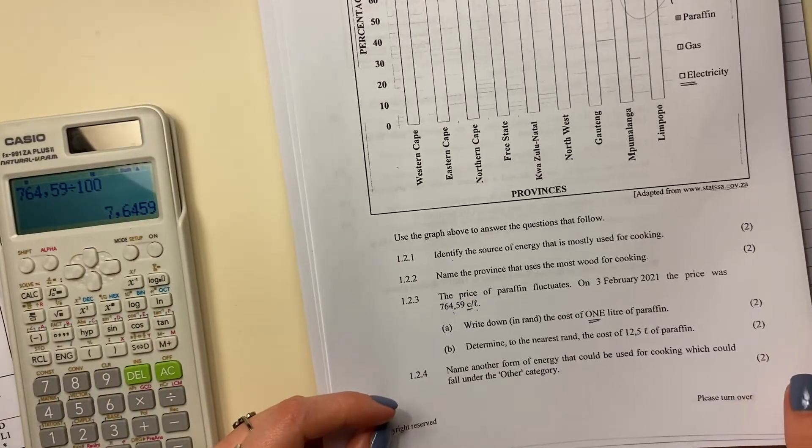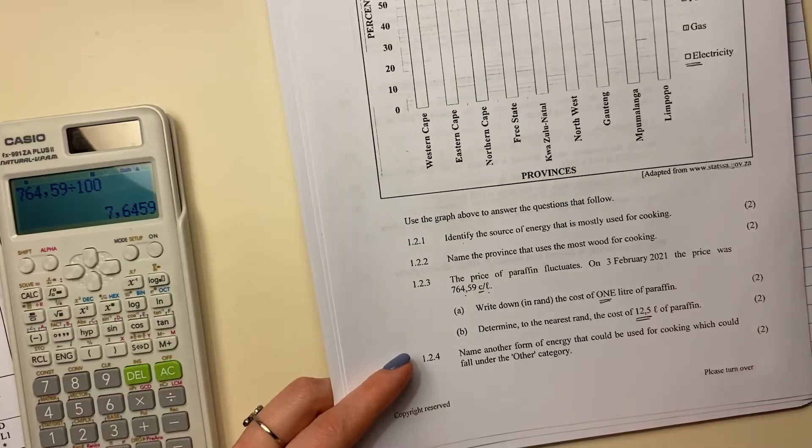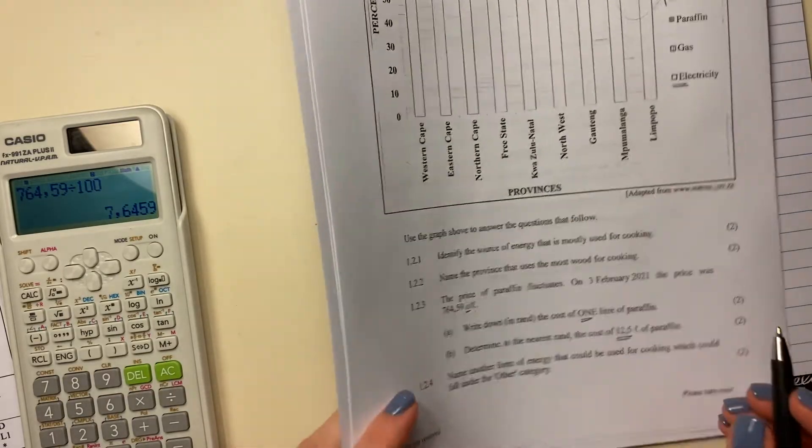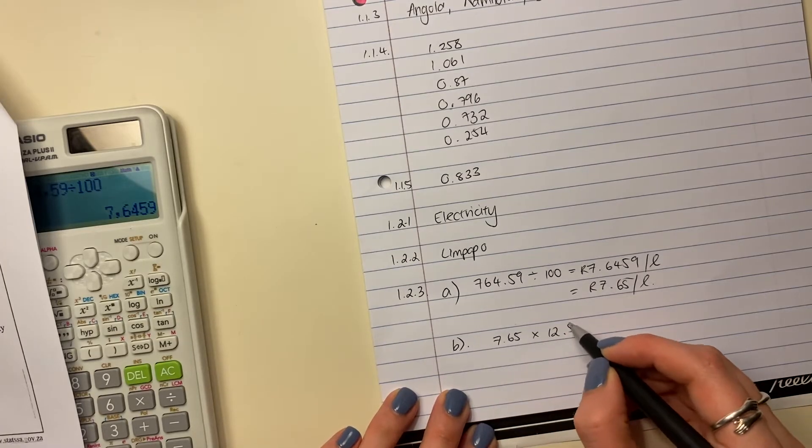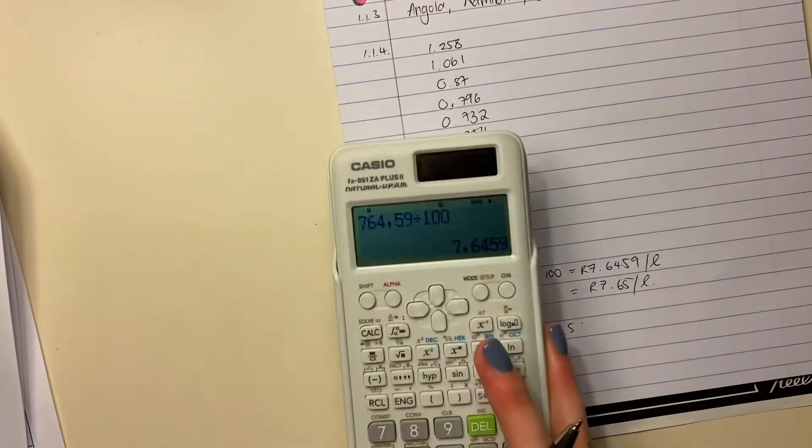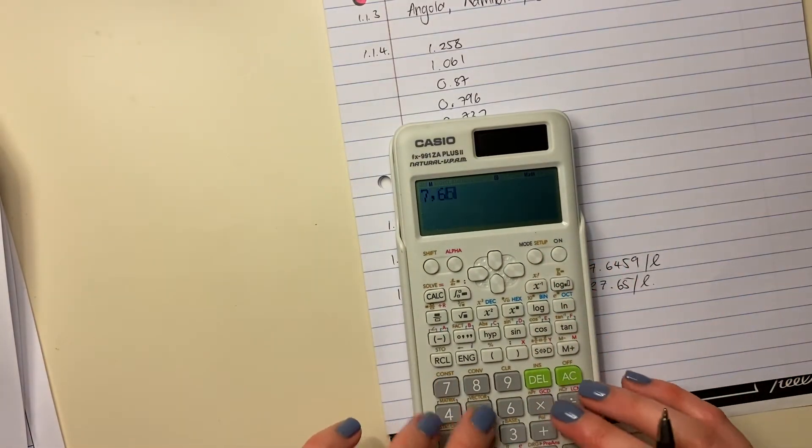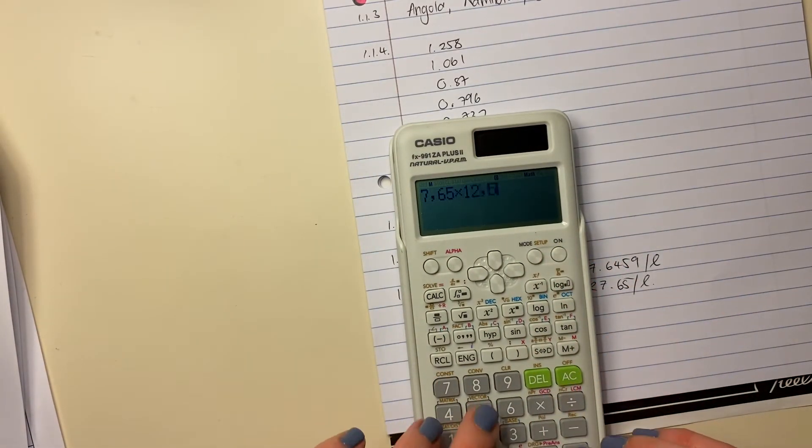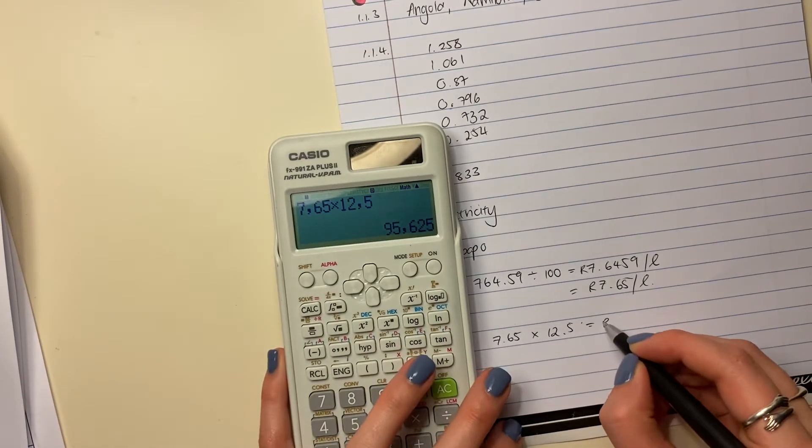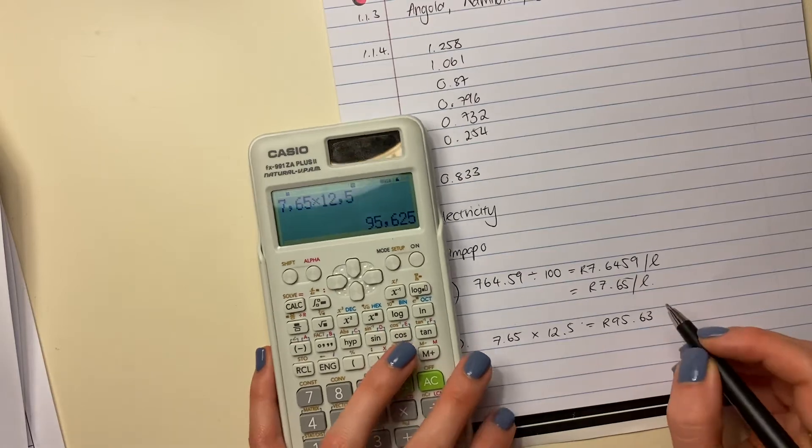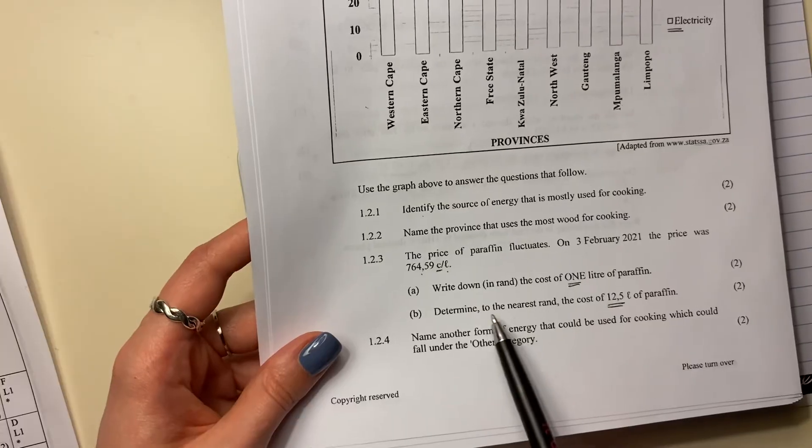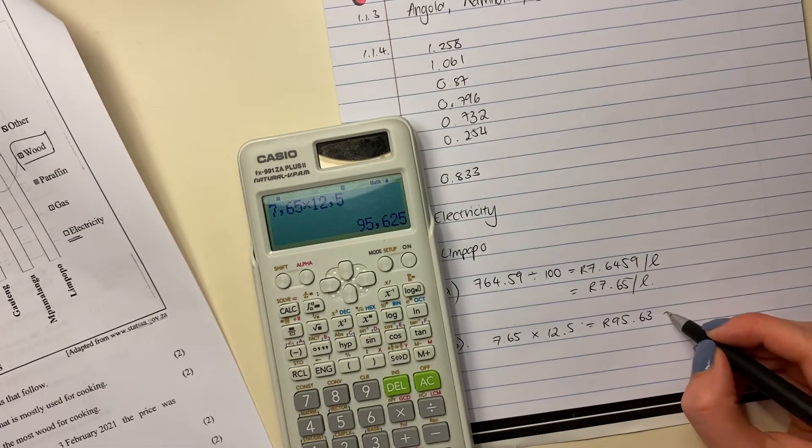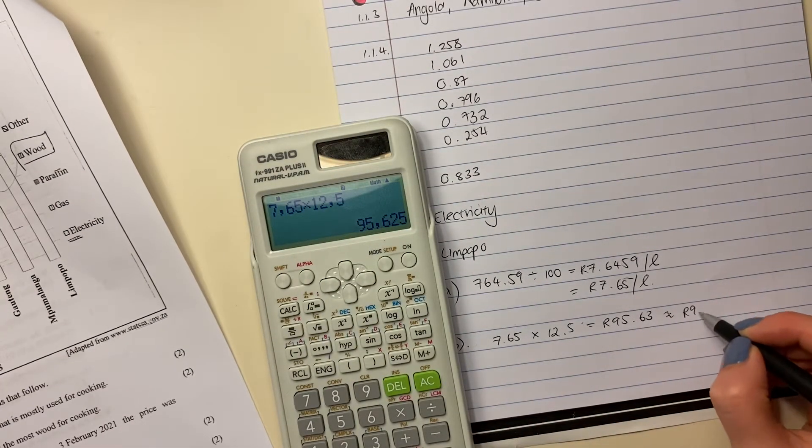Let's move on to the next question. Determine to the nearest rand the cost of 12.5 liters of paraffin. Okay, so now we know this is one liter. So we need to say 7.65 and we're going to times it by 12.5 because that's how many liters we want. So we're going to put that in there, 7.65, and we're going to times it by 12.5. And it's going to equal 95.63 rand. But importantly, did we actually answer the question? No, because it said to the nearest rand. So if we round this to the nearest rand, we have to say it is 96 rand.